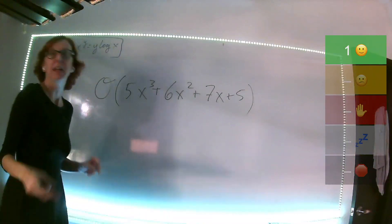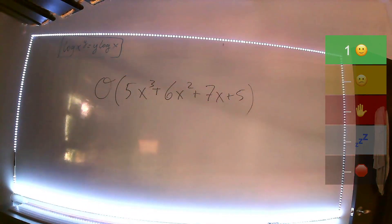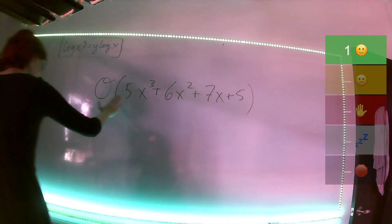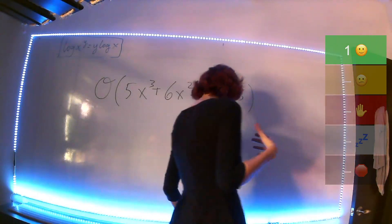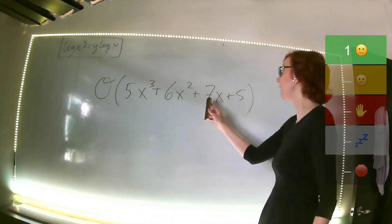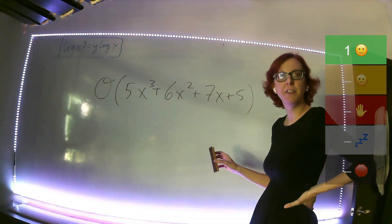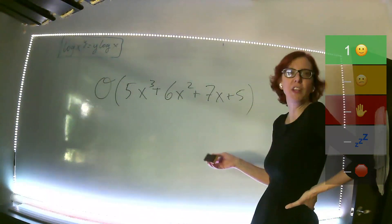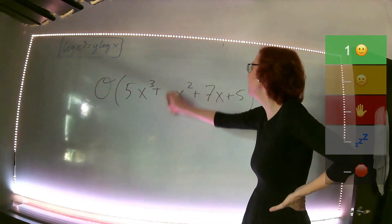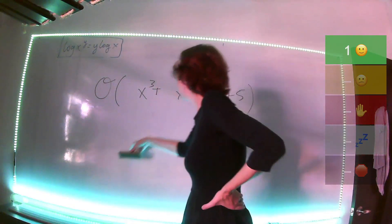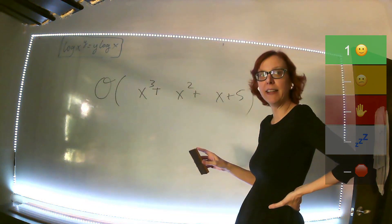Esta función es un polinomio: una sumatoria de términos con potencias de una misma variable, posiblemente multiplicados por constantes. Cuando estoy interesada en crecimiento asintótico, no me interesa ninguna de las constantes. El que sea X al cuadrado, me da igual si es 6 veces, 6,000 veces, o 0.5 veces. Las constantes no importan porque no afectan la forma de la curva; la forma depende de las potencias. Vamos a probarlo en Wolfram Alpha.